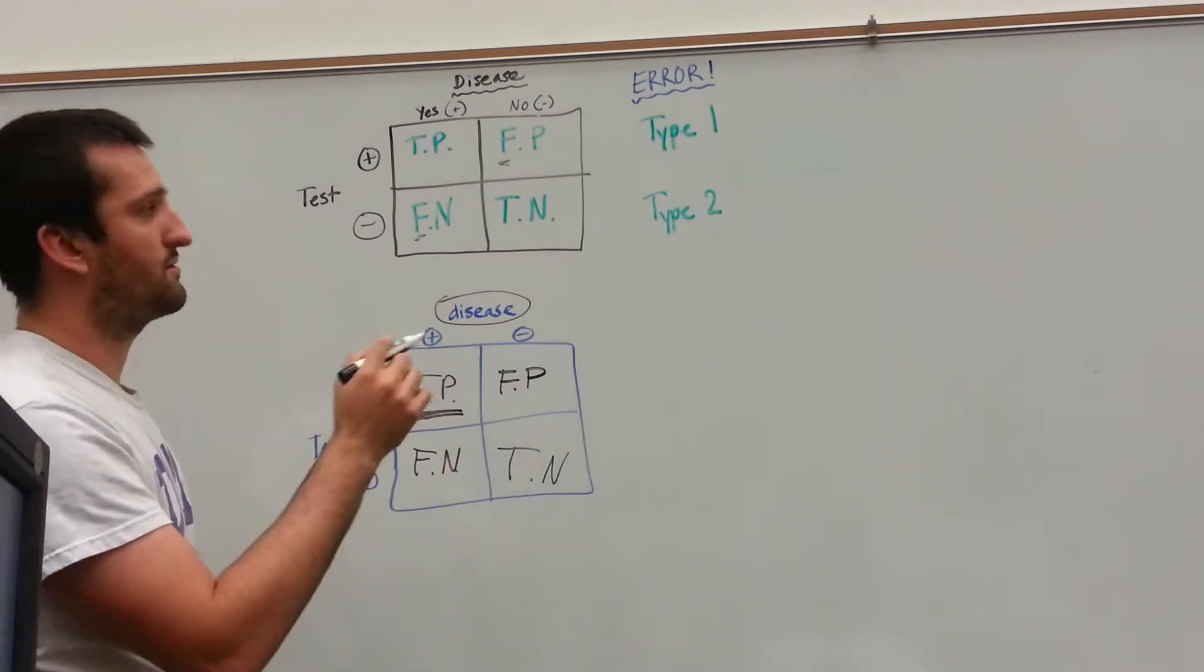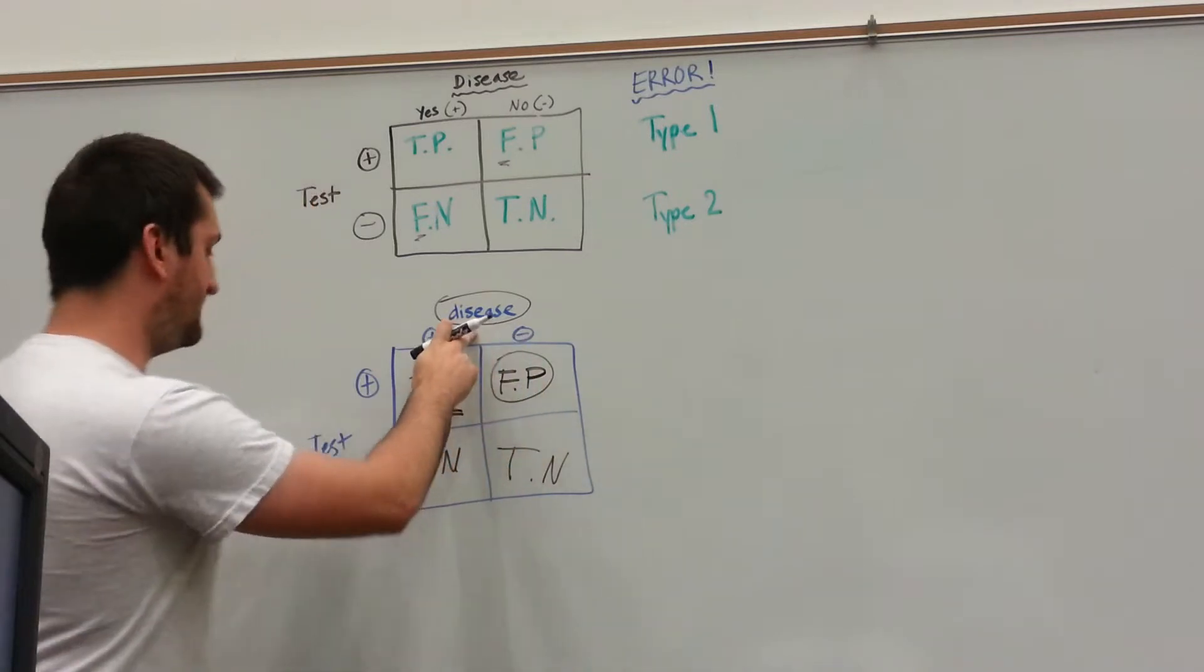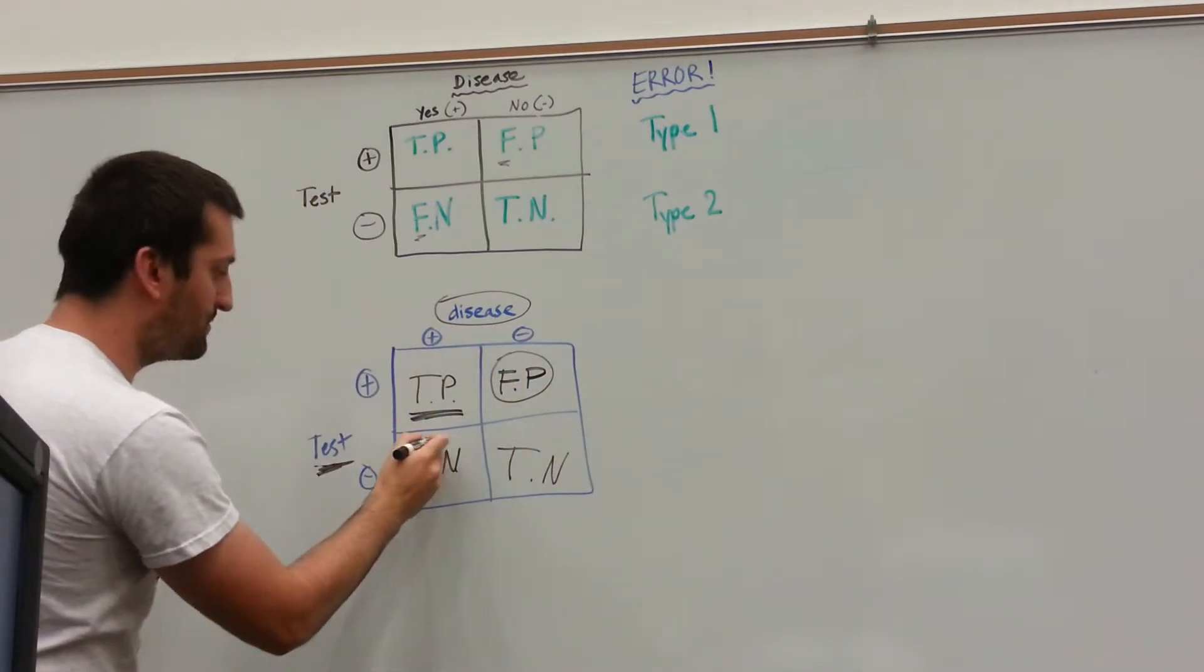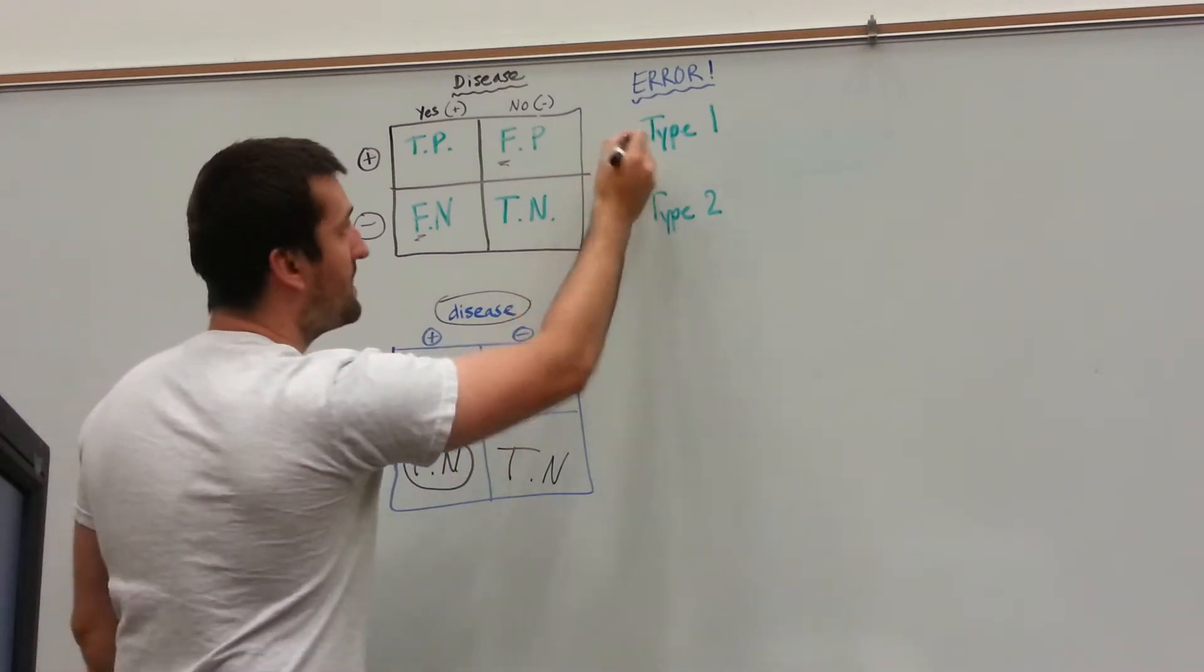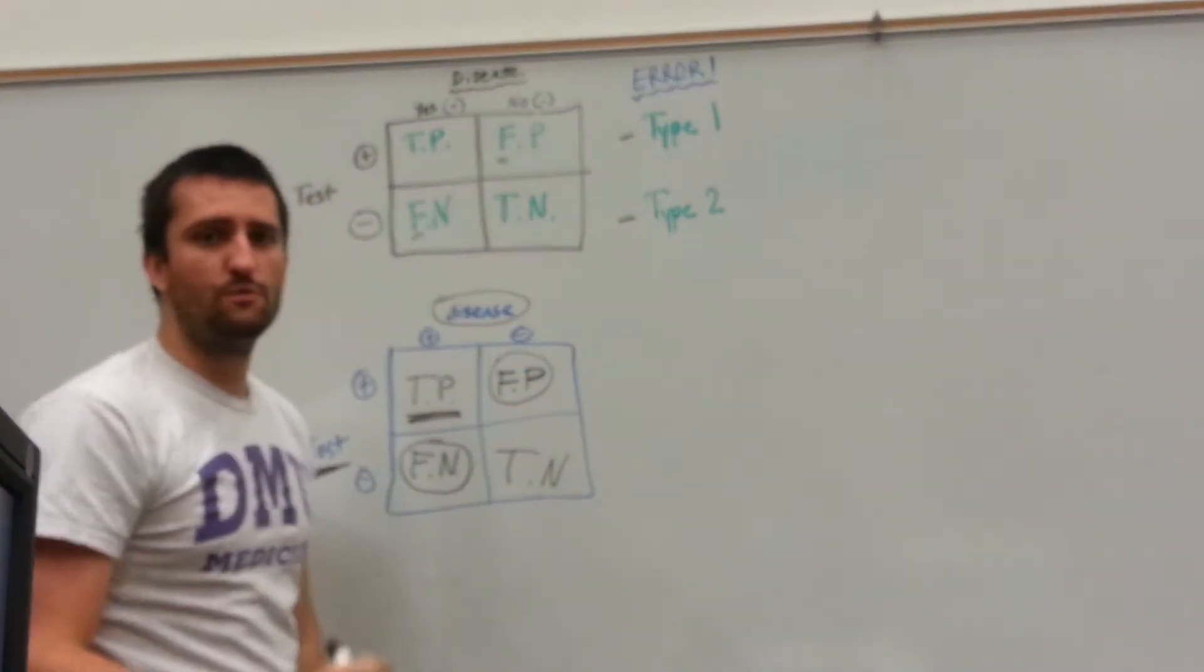Now, there are different types of errors. So this would be an error, because these two don't match up, and this would be an error, because these two don't match up. So there's two different types of errors. Now, a type 1 and a type 2 error.